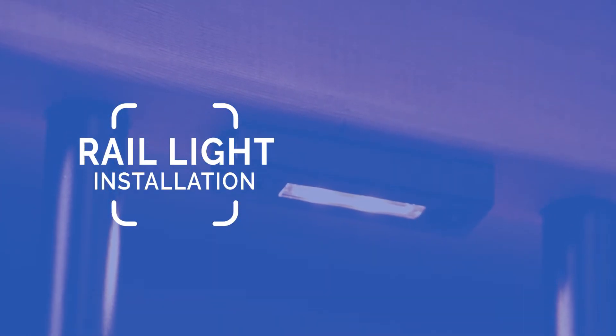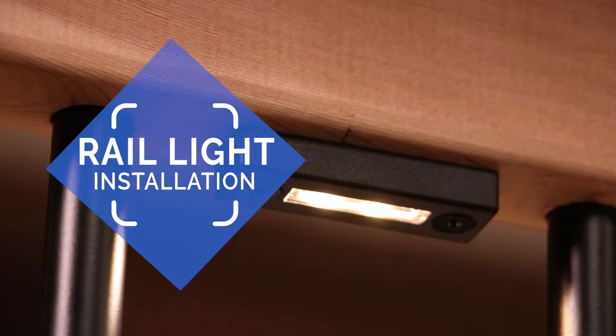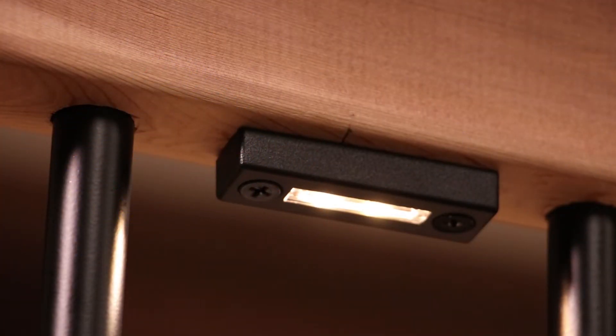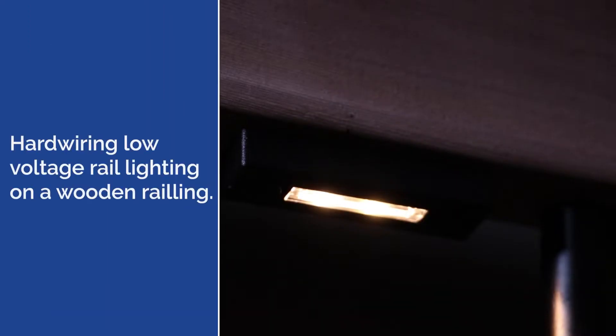With your lighting plan and wiring layout in place and your tools in front of you, you're ready to start installing. Here's a step-by-step guide on how to install a rail mount light.